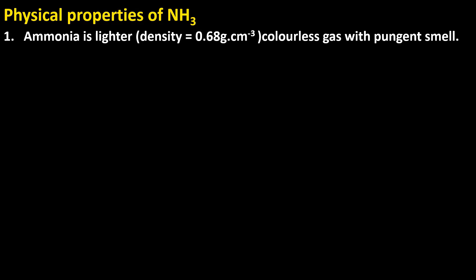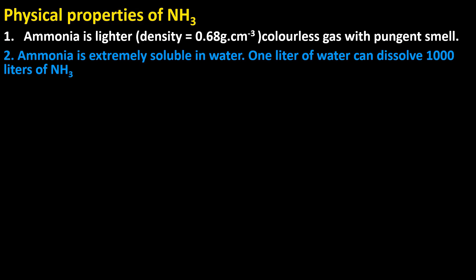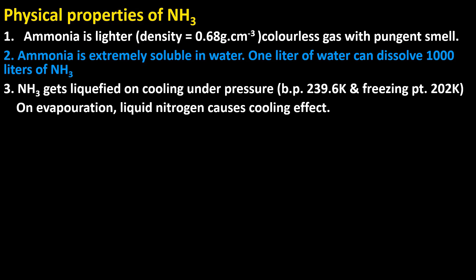Physical properties of ammonia: Ammonia is lighter than air with density 0.68 g/cm³. It is colorless with a strong pungent smell. Ammonia is extremely soluble in water — one liter of water can dissolve 1000 liters of ammonia. Ammonia gets liquefied under pressure; its boiling point is 239.6 Kelvin and freezing point is 202 Kelvin. On evaporation, liquid ammonia causes a cooling effect.